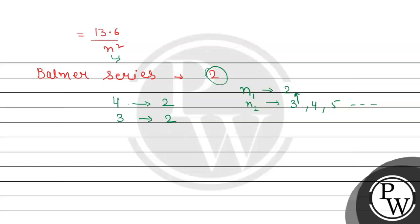So we have two lines. The first line's transition will be from 3 to 2, and the next line will be from 4 to 2. By this we can say that the value of n is 4. The electron that de-excited will be from the fourth orbit.